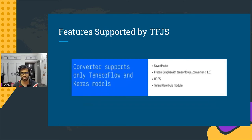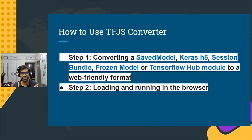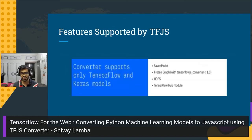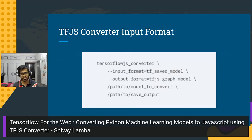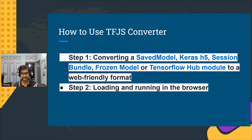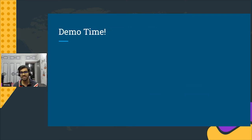The supported input formats include the TensorFlow saved model, the H5 format (which is the Keras model), and the TensorFlow Hub model. Using the TFJS converter is a two-step process: first, convert your Keras H5 or TensorFlow saved model or TensorFlow Hub module into a web-friendly format using the converter. Then you can directly load it into the browser and start running it. Let's move on to the demo.